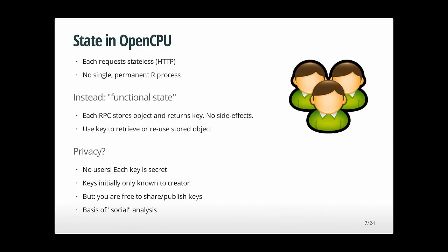One of the major differences between OpenCPU and other R web frameworks is how state is managed. In OpenCPU, each request is stateless — it's HTTP, everything is stateless. Therefore the server does not maintain a single permanent R process for each request, which allows much more efficient use of server resources. You don't have to keep all those R processes alive for users who might not be doing anything.